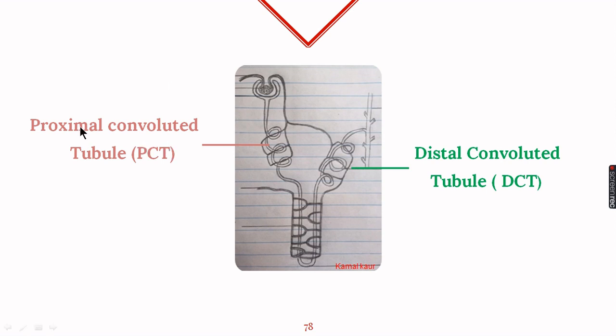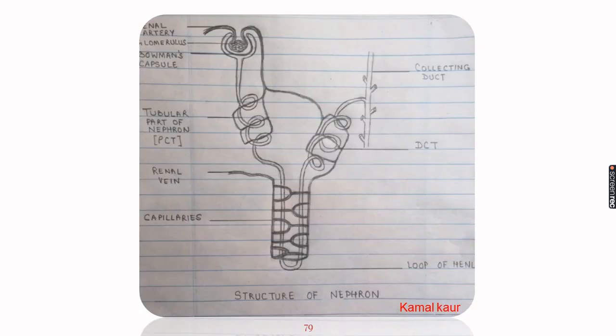PCT is the first convoluted part, called the proximal convoluted tubule of the nephron. DCT is the second convoluted part, called the distal convoluted tubule. These are the two convoluted parts of the nephron, and with this our diagram is completed. You need to practice the diagram at least 2 to 3 times for better results.